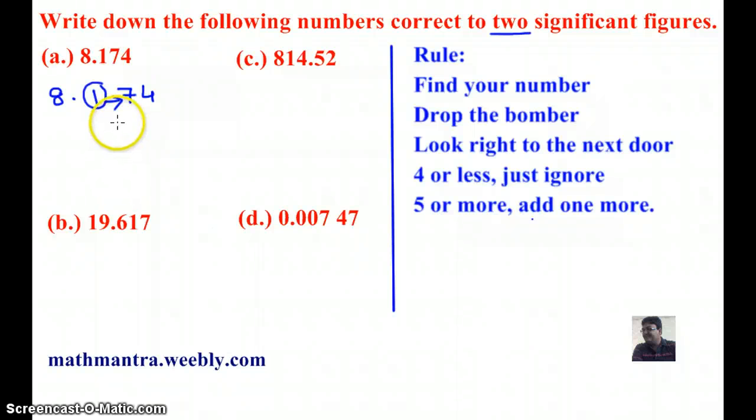So, the next door number is 4, and therefore, according to the rule, I'm going to ignore it because when the next door number is 4 or less, just ignore it. So my answer is 8.17.